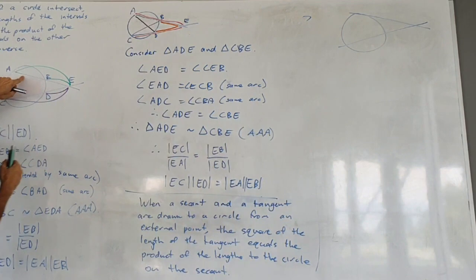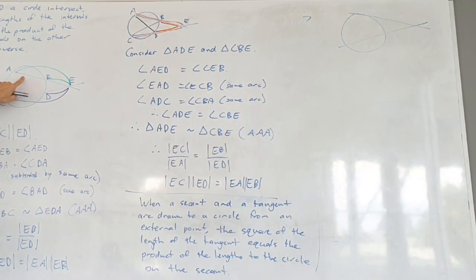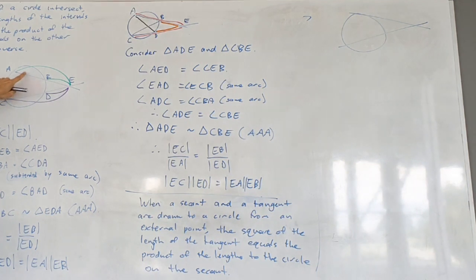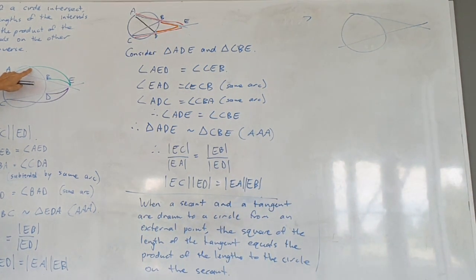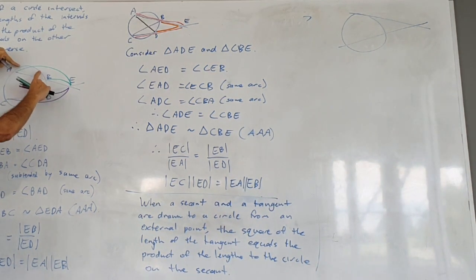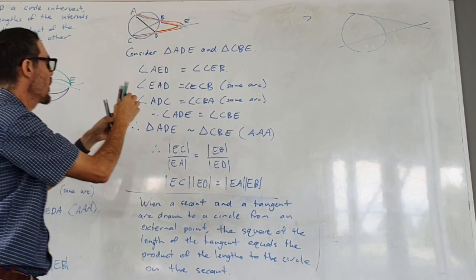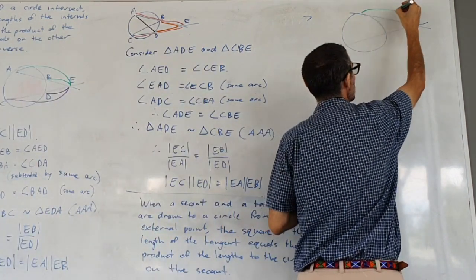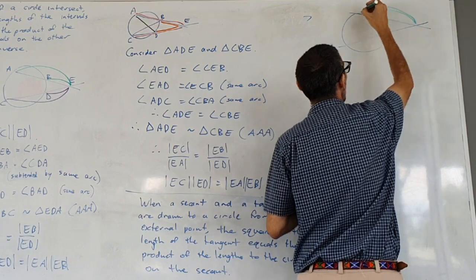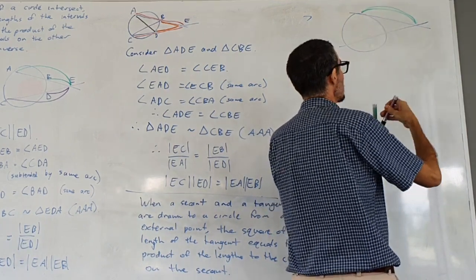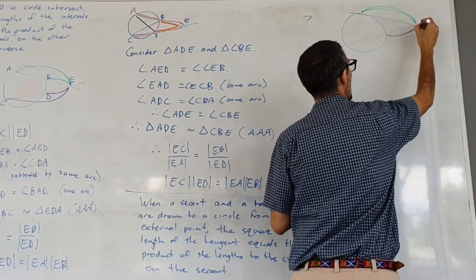So have a look at this, think about what happens as this secant, the top line, gets closer and closer to the top of this circle. When we get to the top, I've got this times itself has to equal this times that.